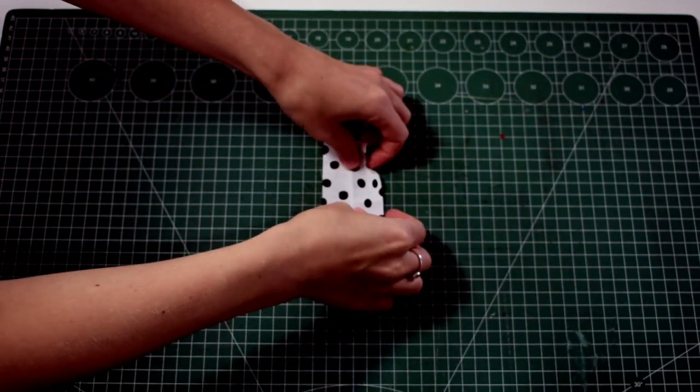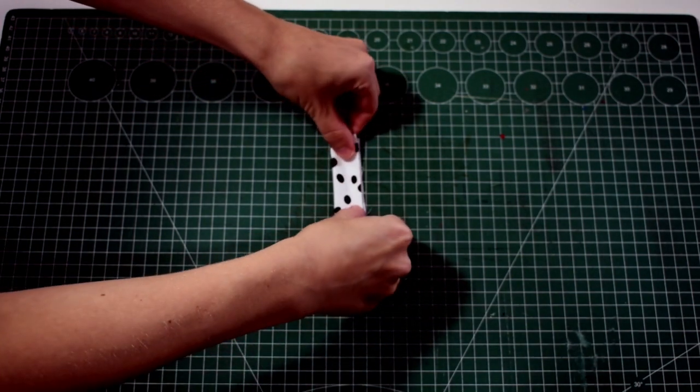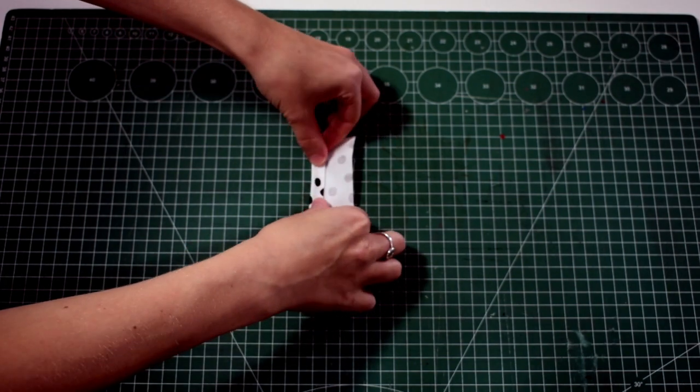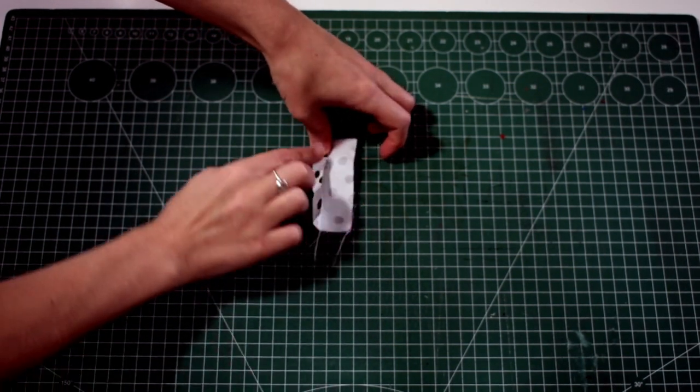Now we're going to start with the small piece. We're going to fold this in half so we know where our halfway point is and then we're going to unfold and then fold to the halfway point and repeat the other side.